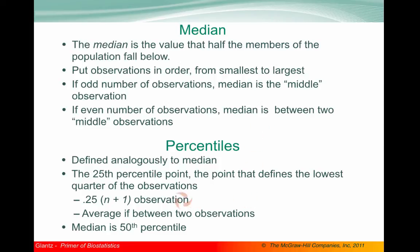Percentiles are defined analogously to the median. For example, the 25th percentile point, the point that defines the lowest quarter of observations, would be computed by multiplying 0.25 by n plus 1 to give us the observation that is equal to the 25th percentile. So if we have, for example, 99 observations, we multiply 0.25 by 99 plus 1, or 100, giving us the 25th observation as the 25th percentile point. In cases where this equation results in a non-integer, we would average if the number is between two different observations. Defining percentiles in this way also gives another way of defining the median, which is merely the 50th percentile.